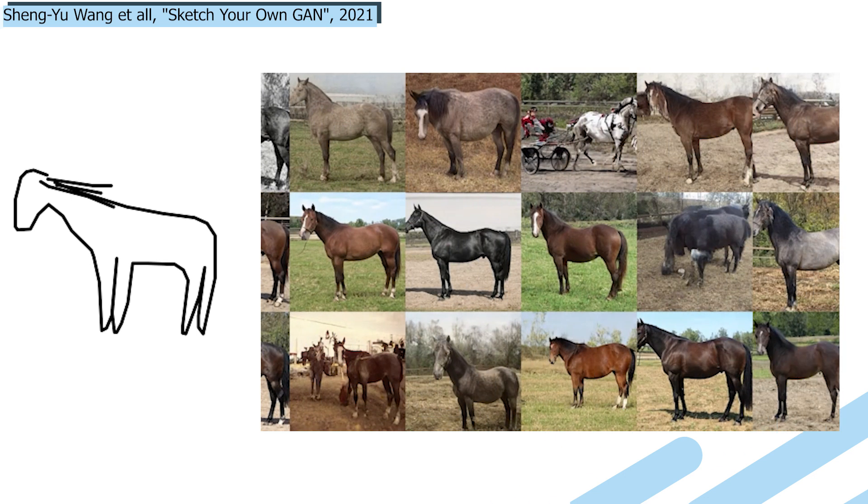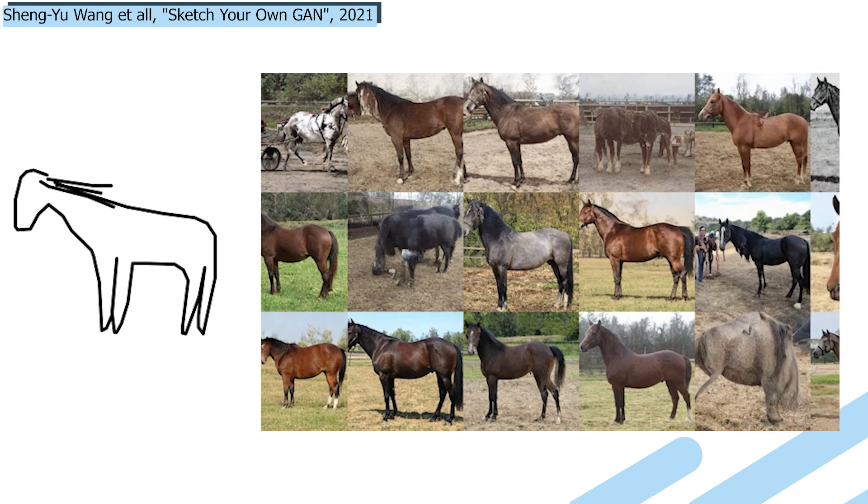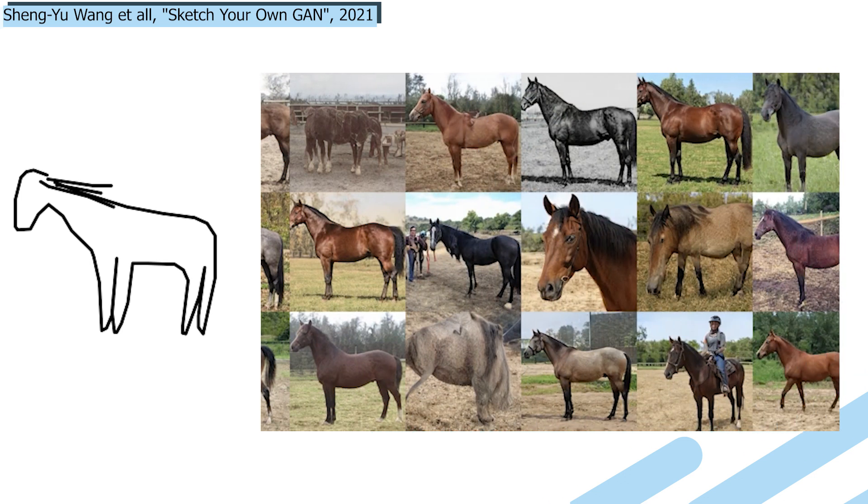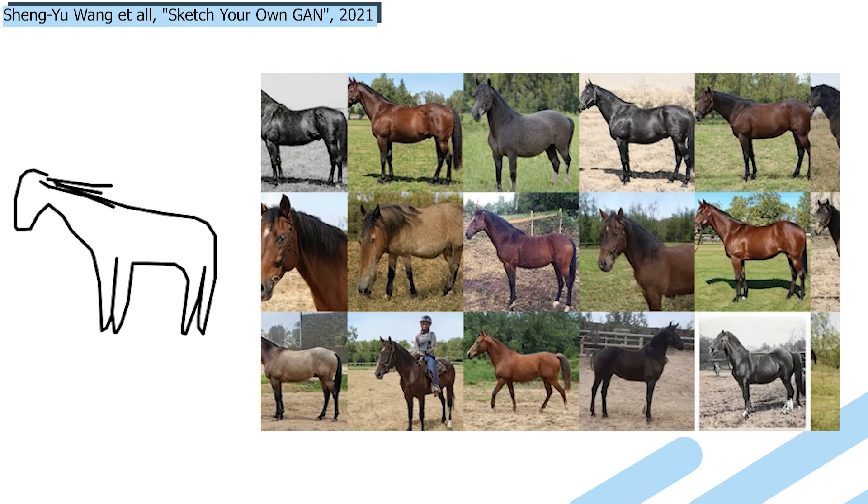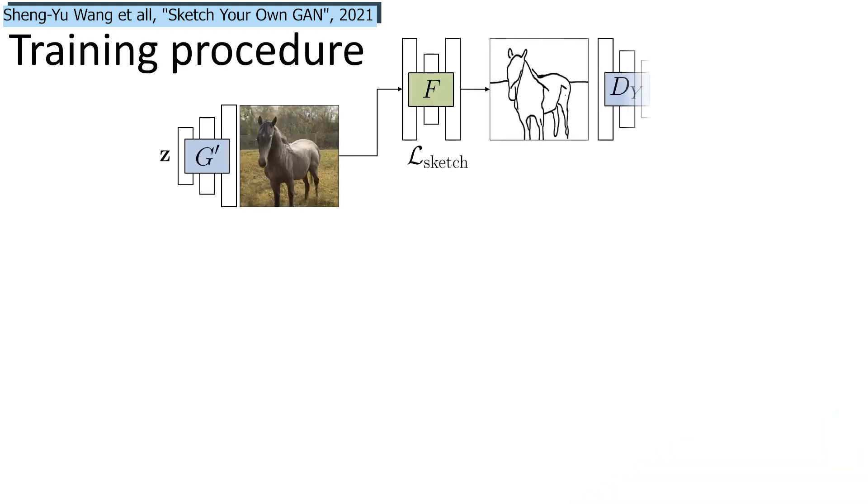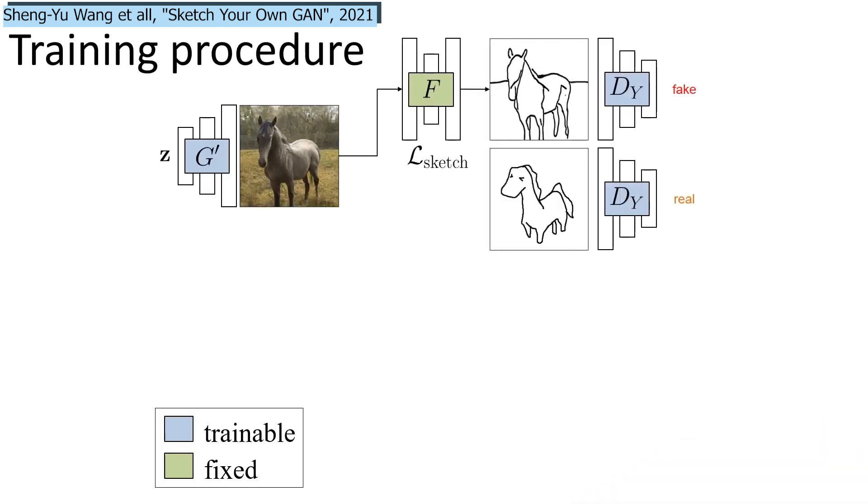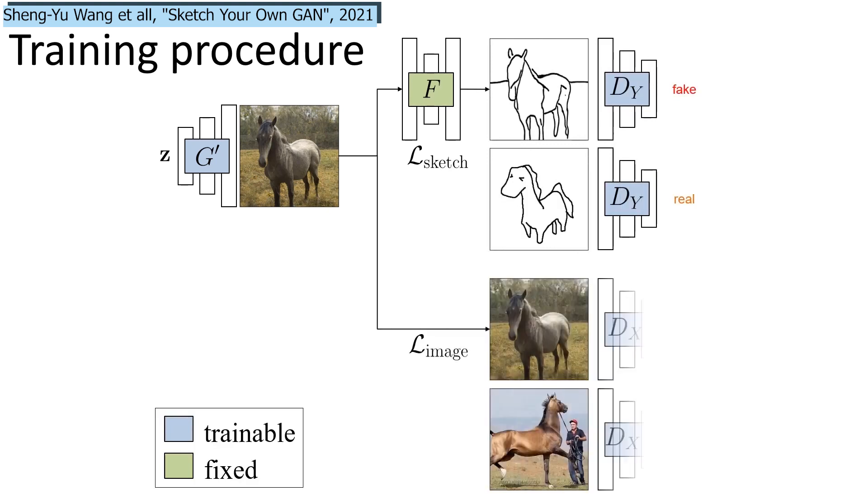To attack the expertise problem, instead of manually figuring out the changes to make to the model, they transform the generated images into a sketch representation using another trained model to do that, called photo sketch. Then, the generator is trained similarly to a traditional GAN training, but with two discriminators instead of one.